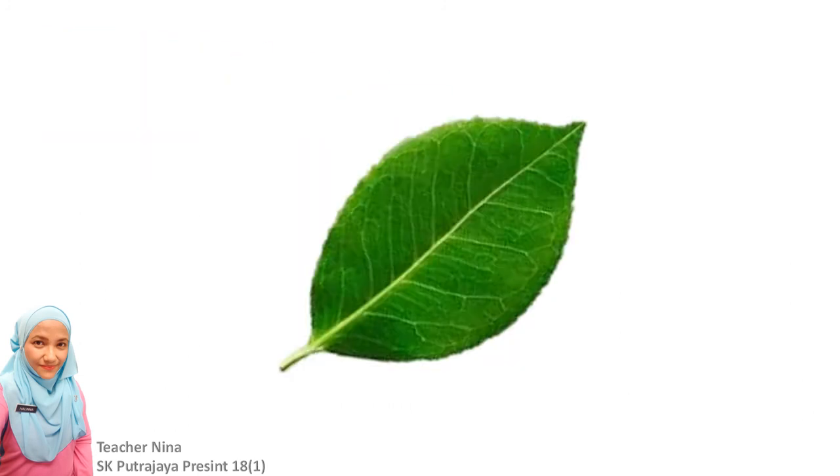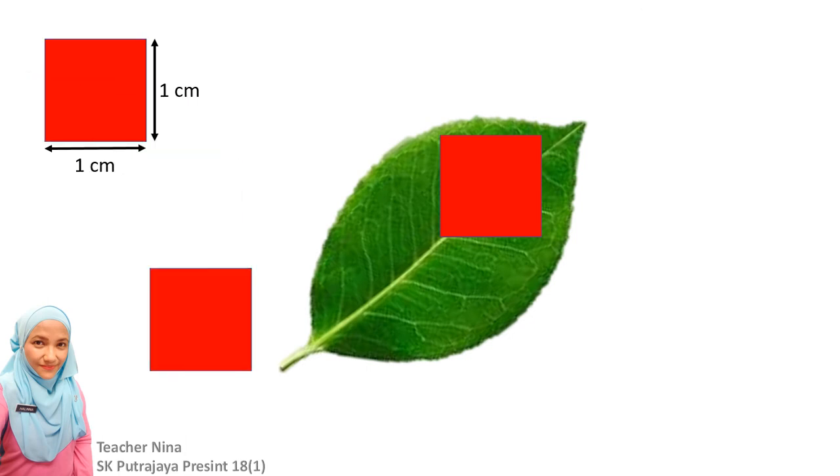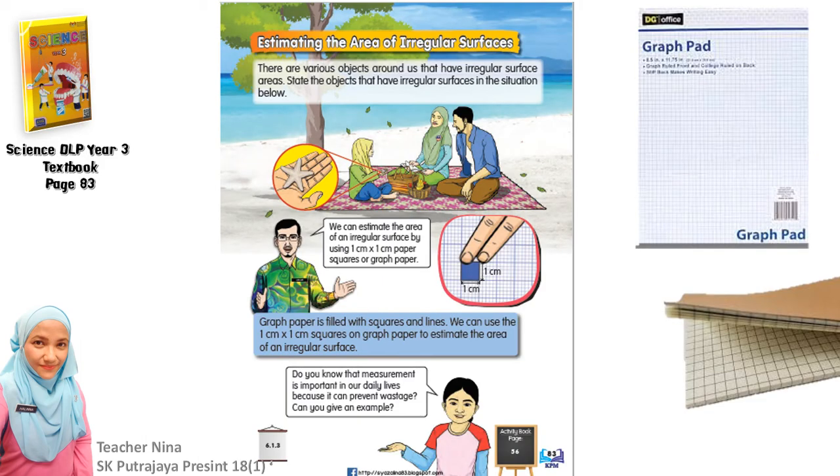So then we counted the red squares and we got 6 cm square for the area of the yellow card. But, now comes the question, what if we have an object that is irregular shaped? It has an irregular surface. For example, this cute leaf. So, how are we going to measure its area? So, if we were to use the same red, 1 cm square. Okay, but how are we going to arrange it onto this leaf? So, that is what we are going to learn today. So, now I need you to open your science year 3 textbook, page 83.